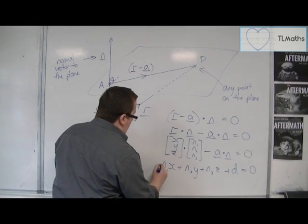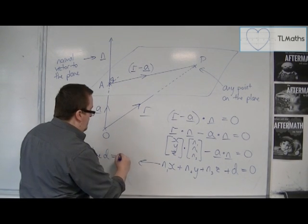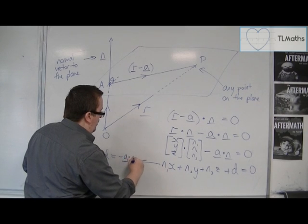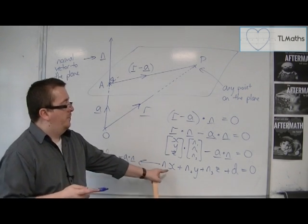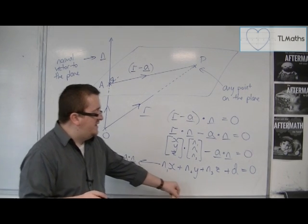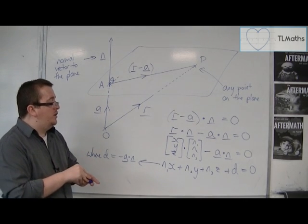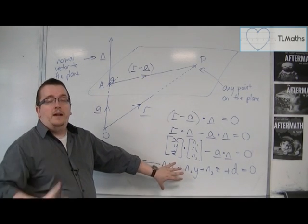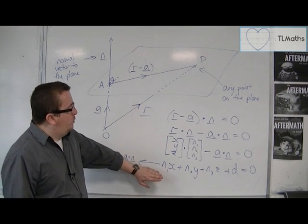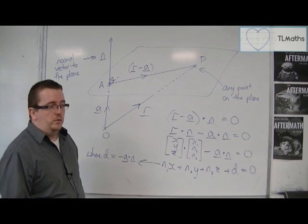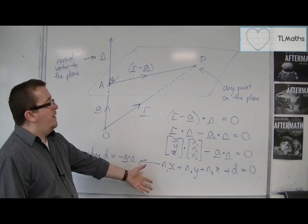So where D, just for information purposes, where D is equal to minus A dot N. That is the equation of the plane, the Cartesian form of the equation of the plane. In the majority of cases, this is much easier to work with than the vector equation of a plane. And it's the one that we more regularly work with in core 4. So this is definitely one to know, kind of where it's come from.